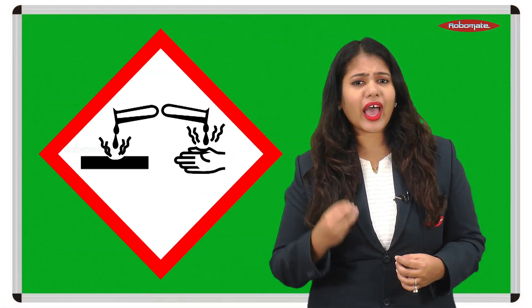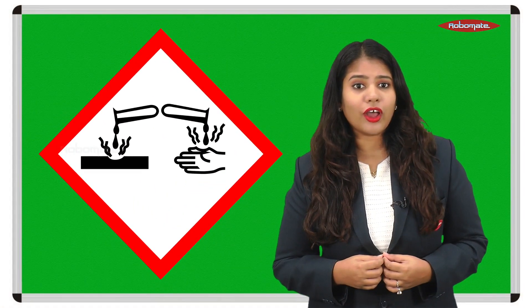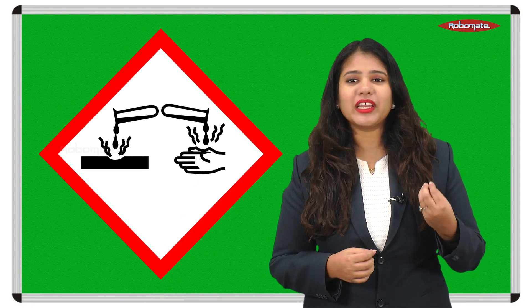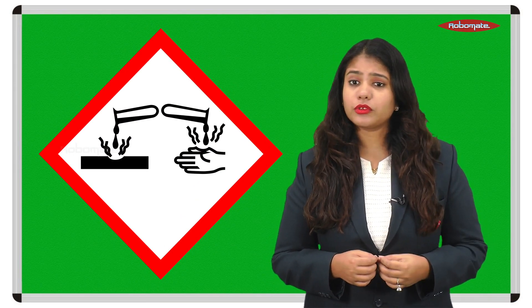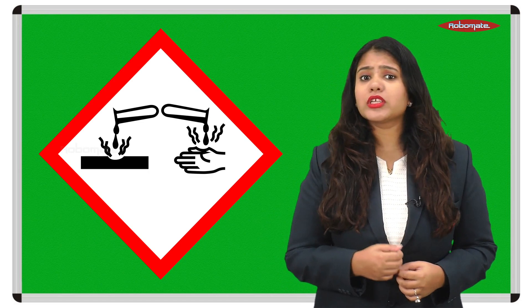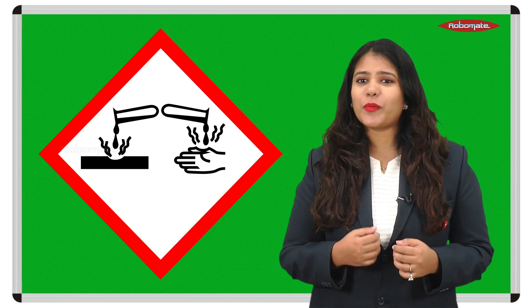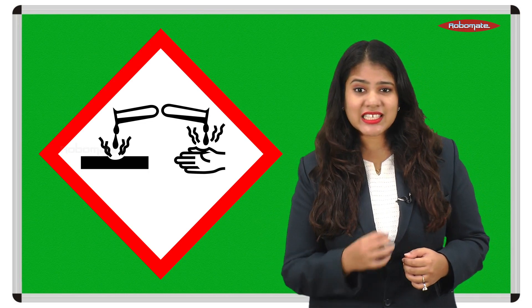So now students, can we determine whether a substance is acidic or basic simply by tasting each and every substance? No, definitely not. Why? Because certain acids and bases are highly corrosive in nature and cannot be touched or tasted. So then how do we determine whether these substances are acidic or basic? This can be done by using indicators.